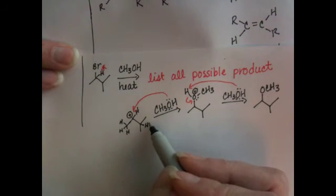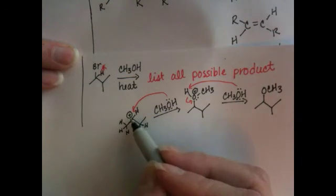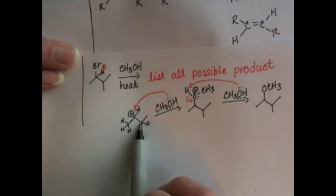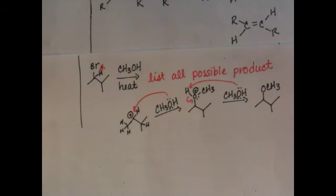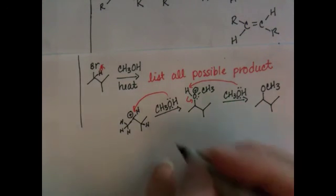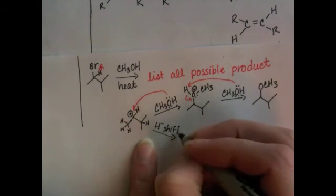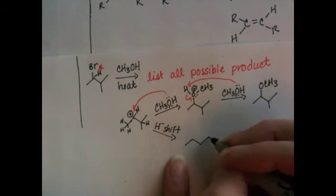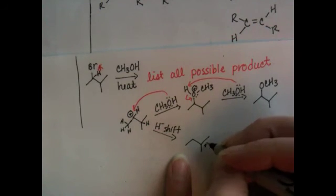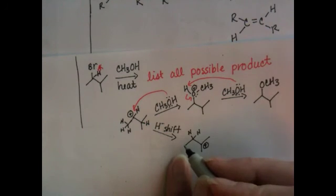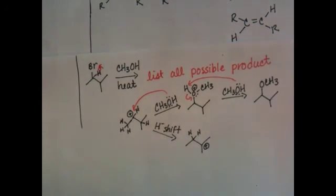A third option would be to move this hydrogen in a hydride shift up here to that position. And if we lost that hydrogen, the positive charge would be on this carbon. That would be a tertiary carbocation. That would be more stable. So we're going to do a hydride shift to form a more stable carbocation. And there now we're going to have two hydrogens up here and these three hydrogens. We didn't do anything with them.